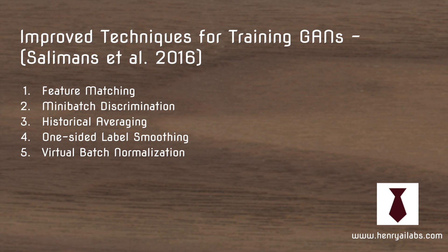Historical averaging makes sure that one faulty gradient signal from the discriminator doesn't change the parameters of the generator too much, and vice versa. One-sided label smoothing is used to prevent overconfident predictions in the discriminator. Virtual batch normalization uses a reference batch for the gains and bias parameters of batch normalization, to reduce the internal influence that batches might have on each other during generation.